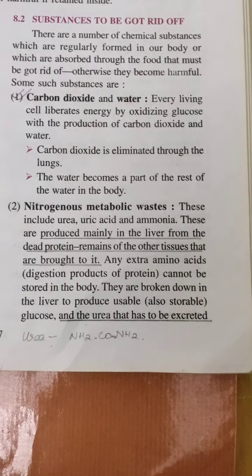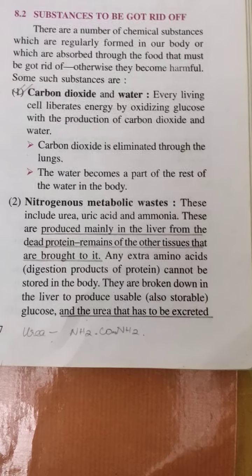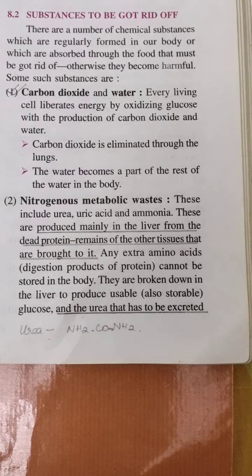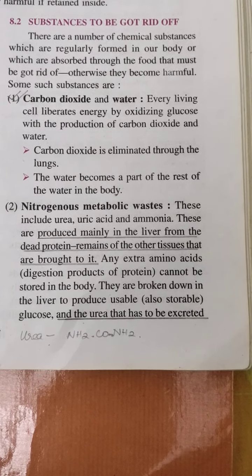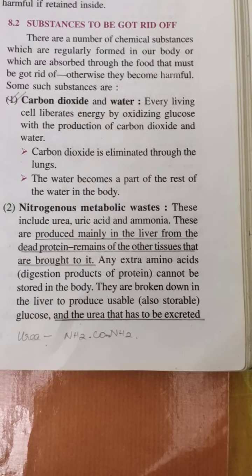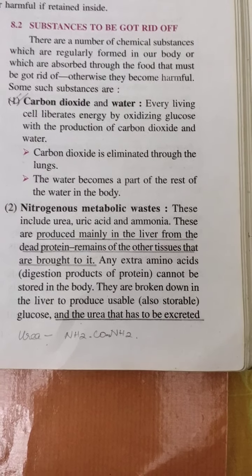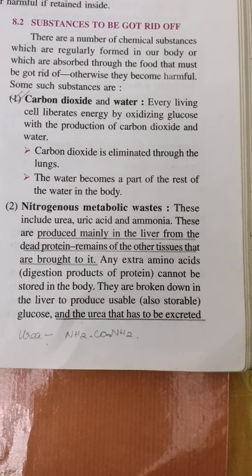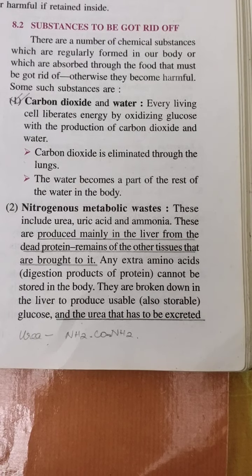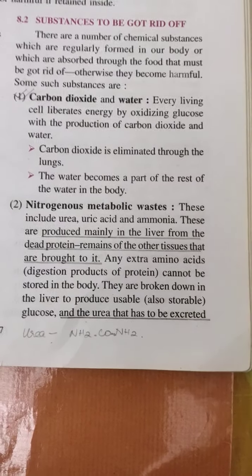Next are nitrogenous metabolic wastes. These include urea (formula: NH2·CO·NH2), uric acid, and ammonia (NH3). These are produced mainly in the liver from the dead protein remains of other tissues brought to it. All three contain nitrogen, so these are nitrogenous substances which can make our body poisonous if not eliminated in proper quantity and at the proper time.